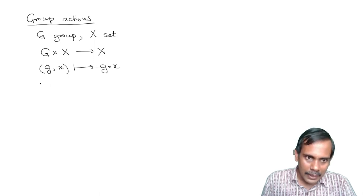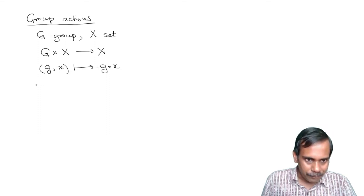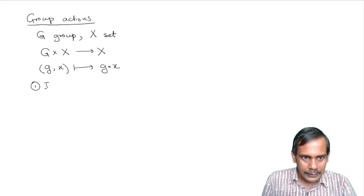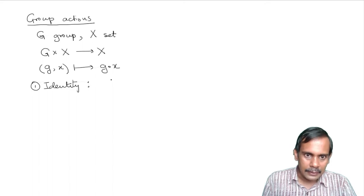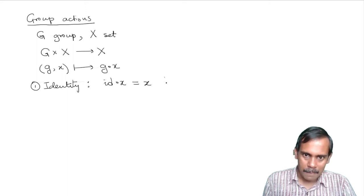This operation must satisfy two axioms to be called an action. The first is the identity axiom, which says that if you take the identity element of G and act on an element X of X, the result is equal to X. The identity element does nothing.